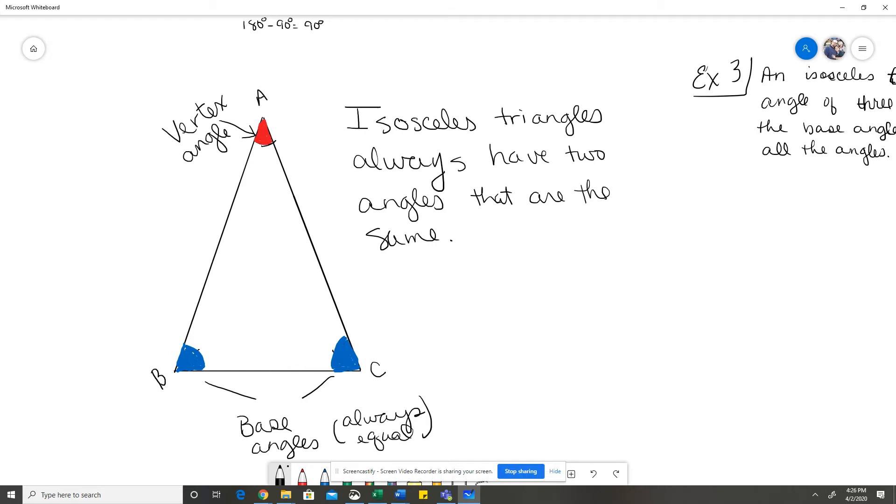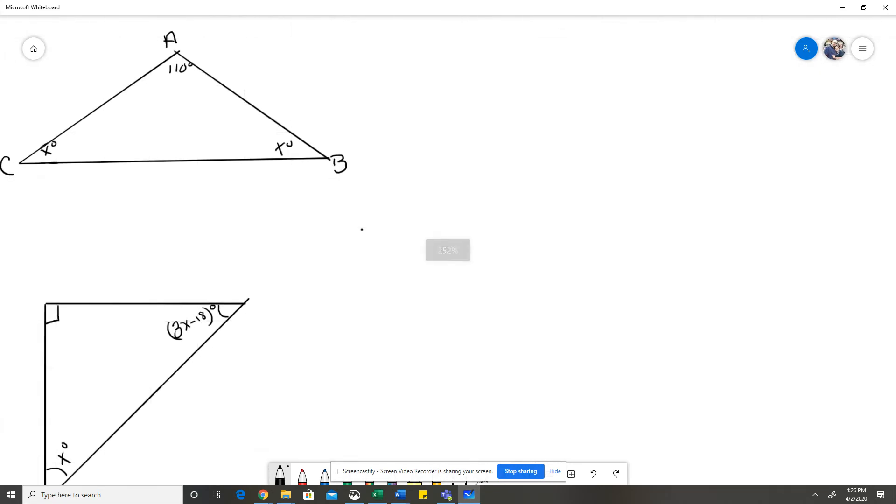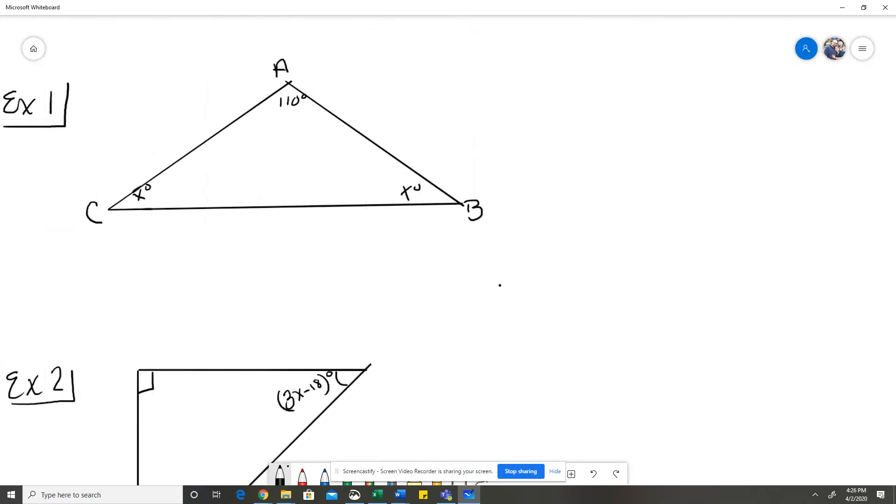Let's look at a couple of examples. So example one, we have angle A is 110 degrees. Angle B and C are both X degrees. So this is an isosceles triangle.